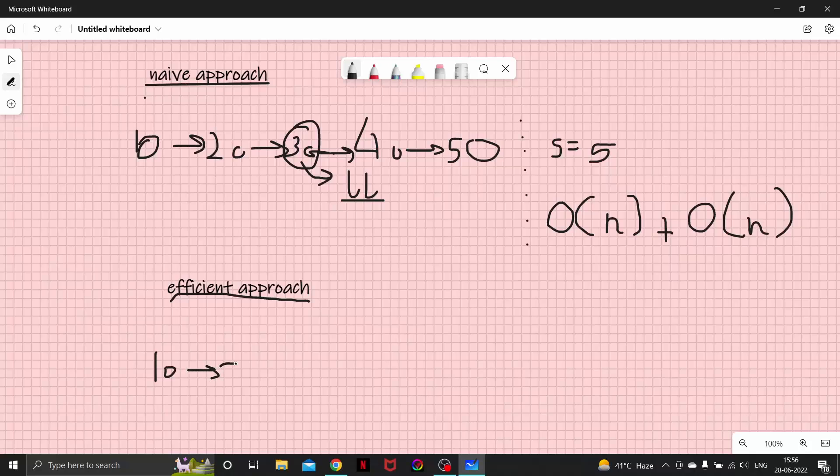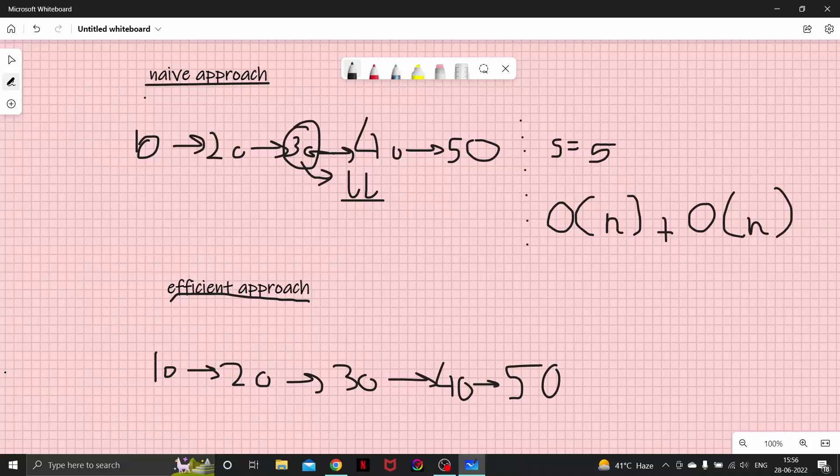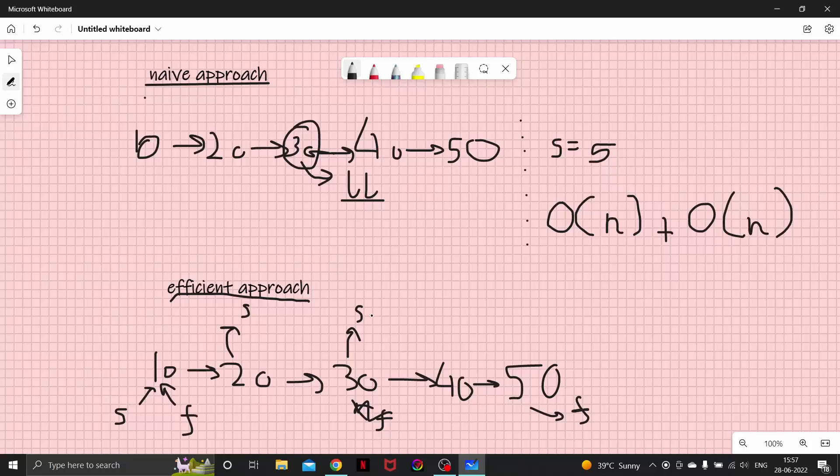Suppose we have the same linked list: 10, 20, 30, 40, 50. Now suppose we have two pointers here. One is slow, one is fast. In every iteration we are increasing slow by one, so slow after first iteration is going to be here, and we are increasing our fast by two, so after first iteration our fast would be here. Now in the second pass, slow will come here and fast will come here. As soon as you see that fast is at the last index, we will simply return the slow. That's how you can find the middle of the linked list.